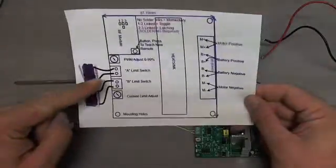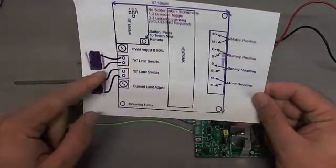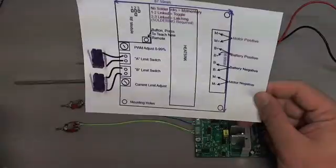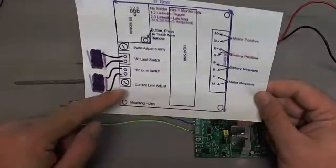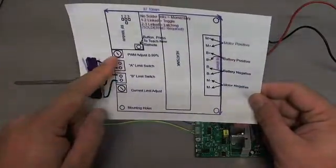And then you'll see on this side we've got our limit switches - our A limit switch which is a forward limit switch, and the B limit switch which is a reverse limit switch. Then we've got our current adjust down here and our PWM adjust.